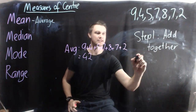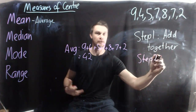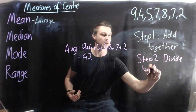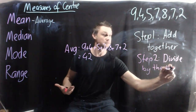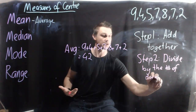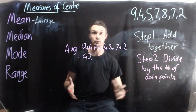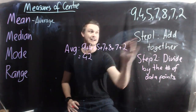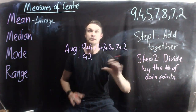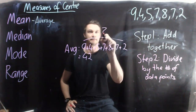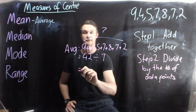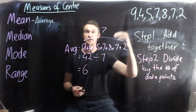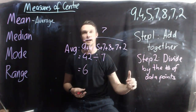Once I've added them all together, step two — write this down — is to divide by the total number of data points. In this case, my basketball team has seven players: 1, 2, 3, 4, 5, 6, 7. So I'm going to have 42 divided by 7. Now 42 divided by 7 gives me the answer of 6, and that is my average. The two steps to get the average are: add them all together, then divide by the number of data points you have.